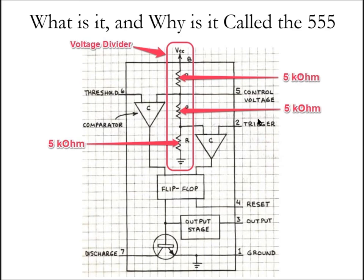There are also two comparators in here. Comparator 1 attached to pin 2, Comparator 2 attached to pin 6. When the voltages on both sides are equal, it triggers the comparator to send an output to the flip-flop. Pin 2 is at the one-third VCC point. When this external voltage gets down to one-third VCC, it activates the comparator to trigger the flip-flop.